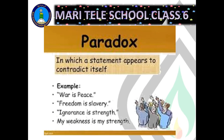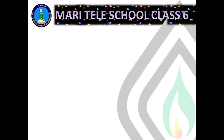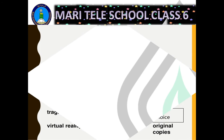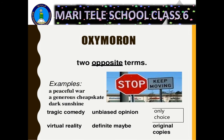The next poetic device is paradox, in which a statement appears to contradict itself. Examples could be 'freedom is slavery' or 'ignorance is strength' or 'my weakness is my strength' — two contradictory things come together in the same line. In poetry, when two opposite terms are combined, it is called an oxymoron. Examples include 'a peaceful war', 'a generous cheapskate', 'dark sunshine', 'tragic comedy', 'unbiased opinion', 'virtual reality', 'definite maybe', and 'stop, keep moving'. Poets use these opposite terms together to create emphasis.